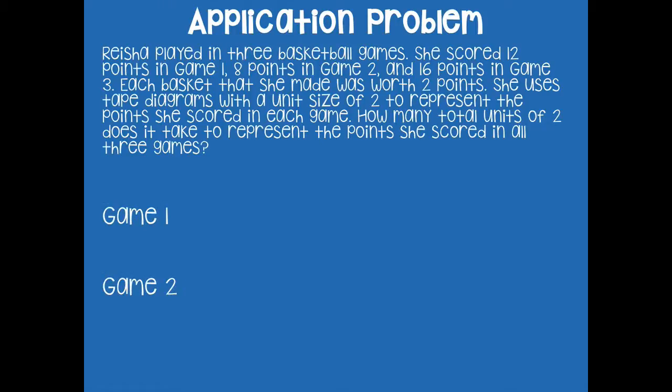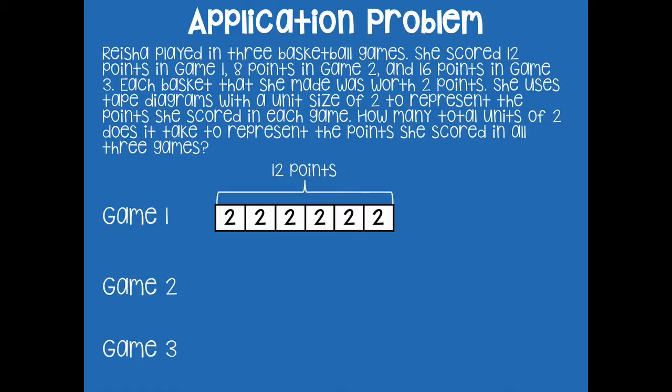I'm going to make tape diagrams for each one of the games — game one, game two, and game three. Starting with game one: she scored 12 points. Each basket was worth two points, so we'll draw our tape diagram with a unit size of two. Each part of our tape diagram is worth two, and we count by twos to get to 12. So I draw: two, four, six, eight, ten, twelve.